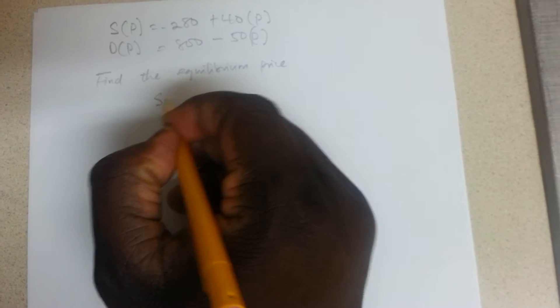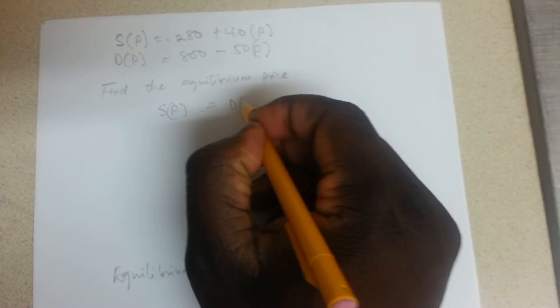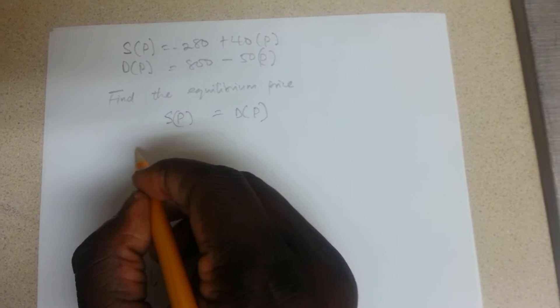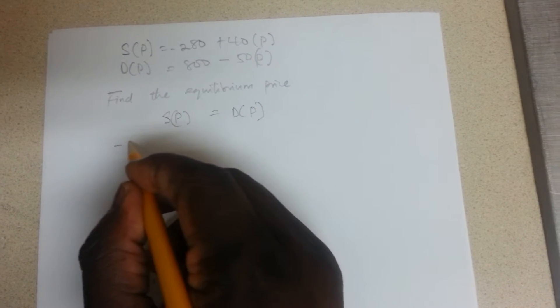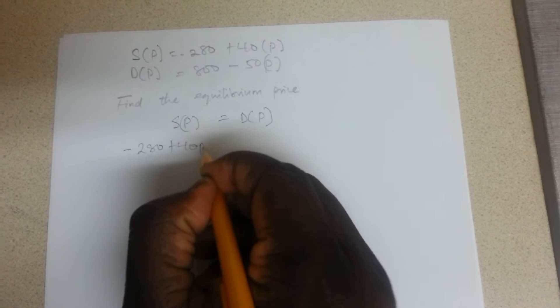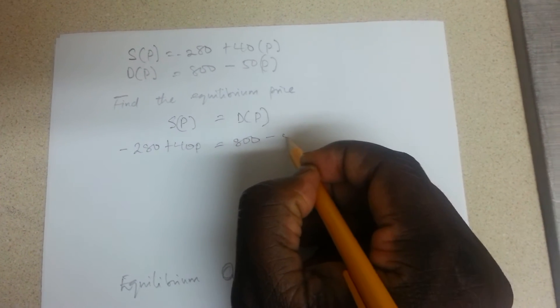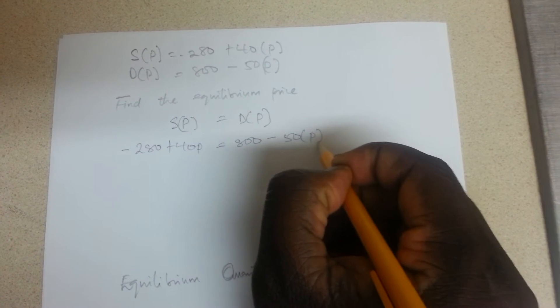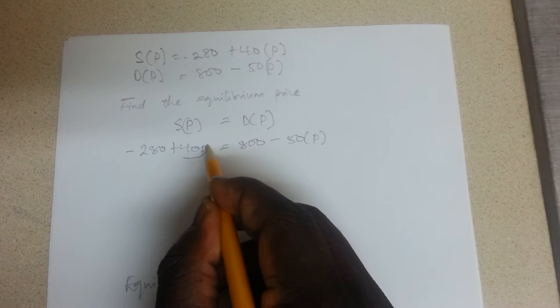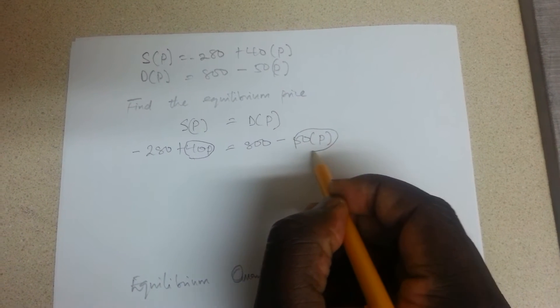SP is equal to DP. So we have for SP, for your supply, you have negative 280 plus 40P, and for the demand 800 minus 50P. So collect like terms. What I mean by collecting like terms is this term right here has to meet this term right here.